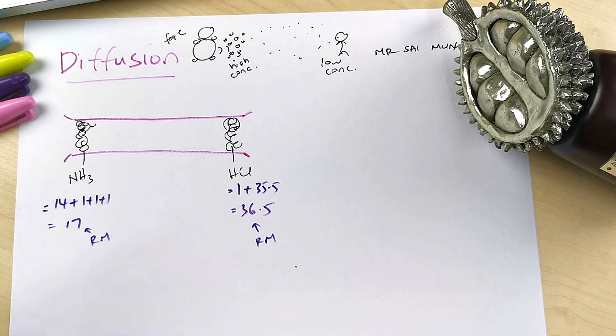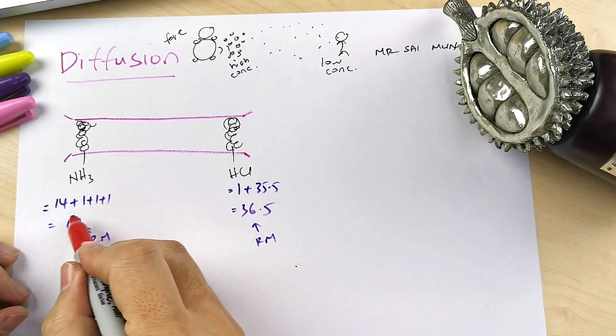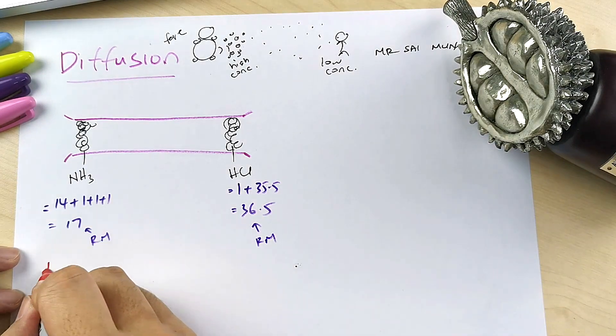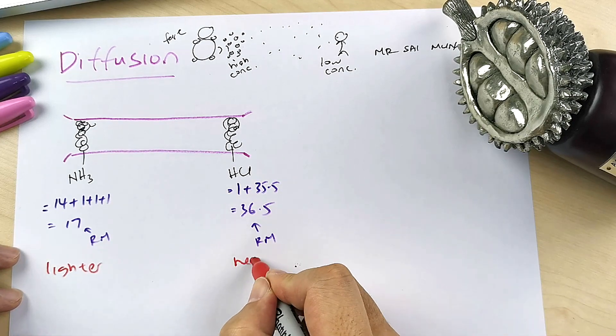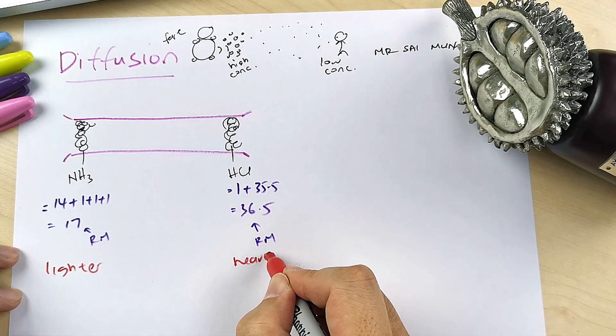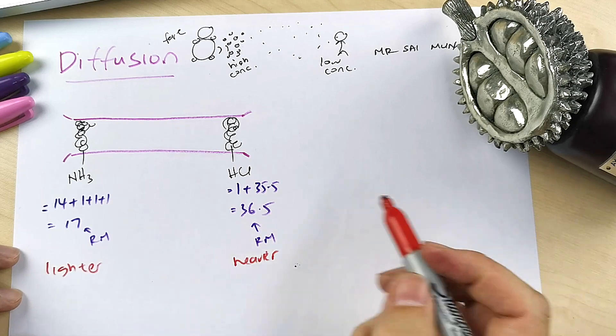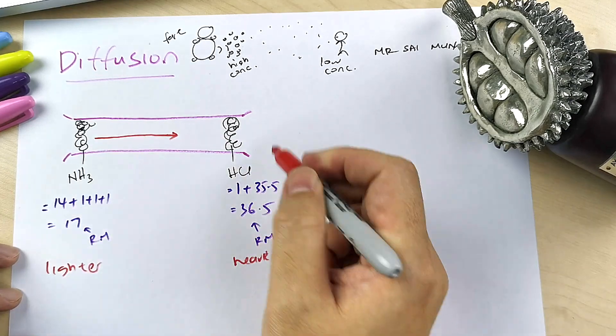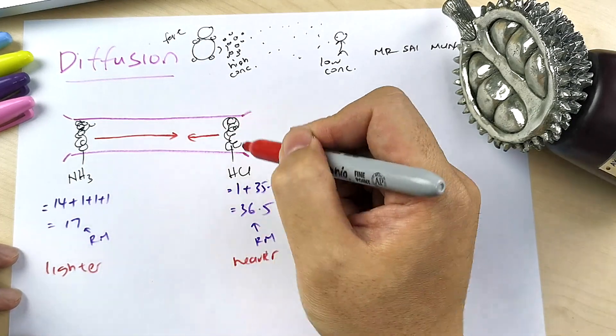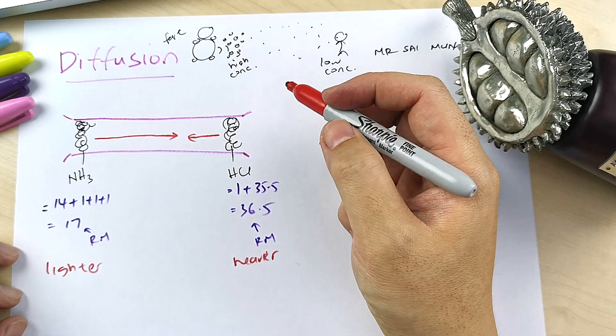So to explain what will happen, this is 17, so it's lighter. This is 36.5, it's heavier. The heavier one will move slower, so this hydrogen chloride, to be exact.